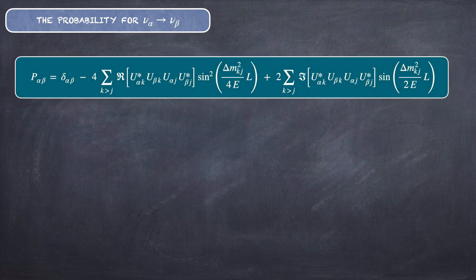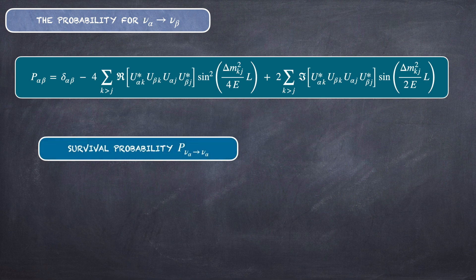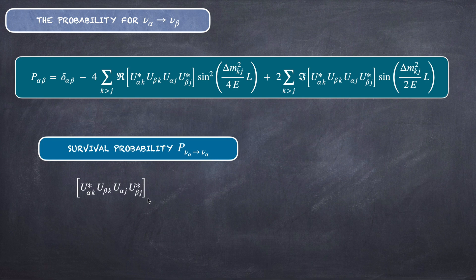To conclude, this is the calculation of the neutrino oscillation probability for three Dirac neutrinos assuming a plane wave treatment. We are now ready to investigate some interesting properties of this probability. Let's first calculate the survival probability when β = α.